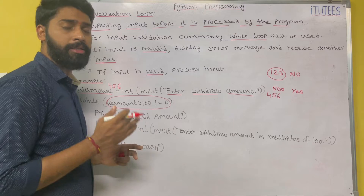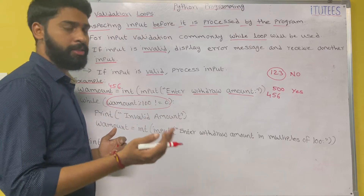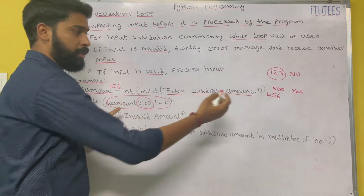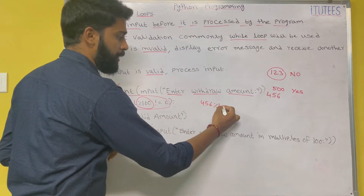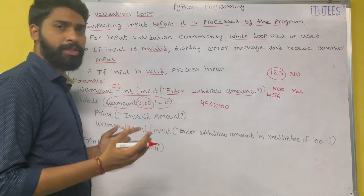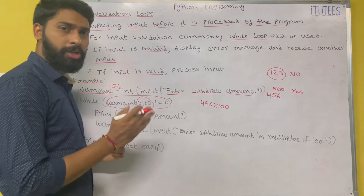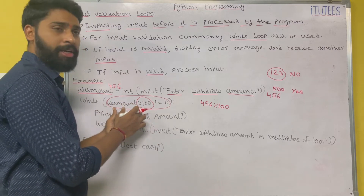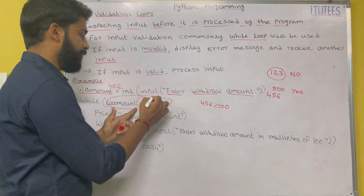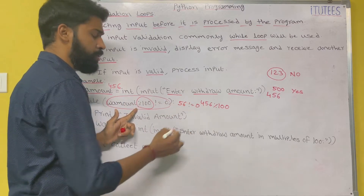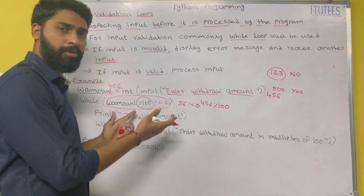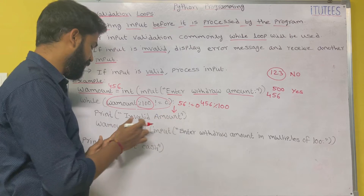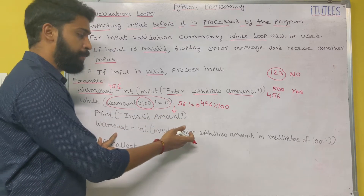The condition here is: whatever amount you enter must be a multiple of 100. How we can check this — the logic is: amount percentage 100. So 456 percentage 100 — if we get 0, that is valid; if it is not 0, that is invalid. So withdraw amount percentage 100 gives 56. 56 not equals to 0 — yes — so we enter into the block, it prints 'Invalid amount', and again asks for input.